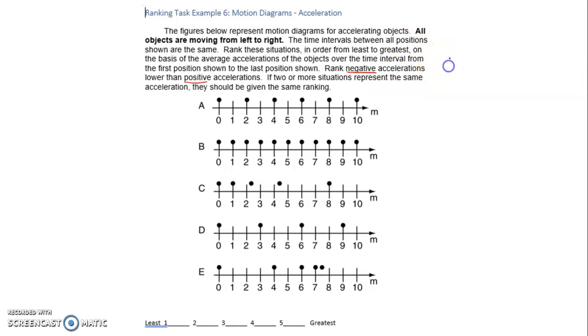Remember that acceleration is a vector and it's equal to change in velocity over change in time. Whenever we see a delta, this triangle here means final minus initial, so final velocity minus initial velocity. We could say these are all in the x direction divided by the time.